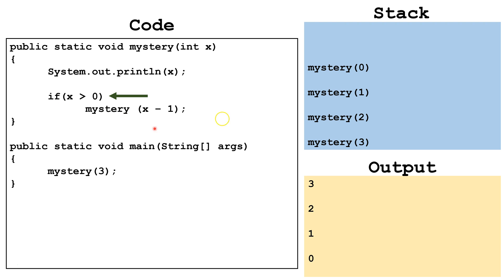We finish up mystery(0) and pop it off the top of the stack. Then we finish up mystery(1) and pop that off the stack. We finish up mystery(2) and pop it off. We finish up mystery(3) and pop it off the stack. Then we are done with the program. You can see the ordering of the output is in the opposite order compared to when we did it with head recursion.